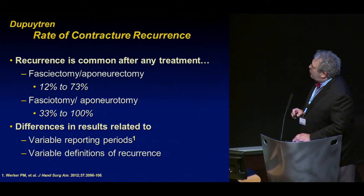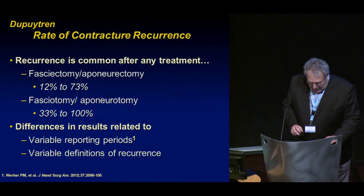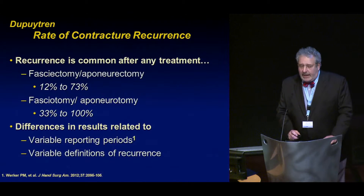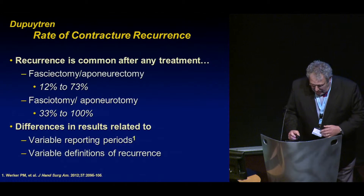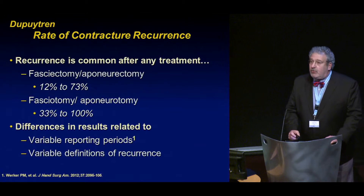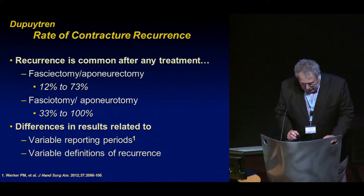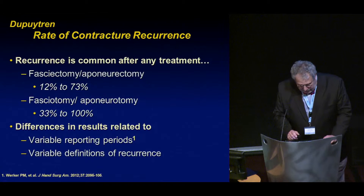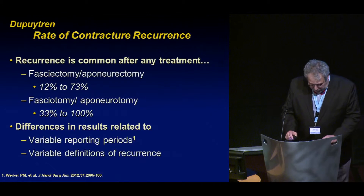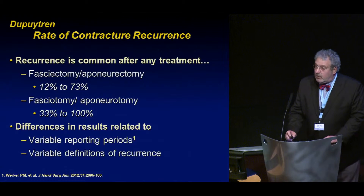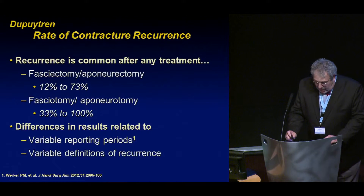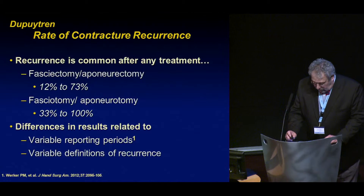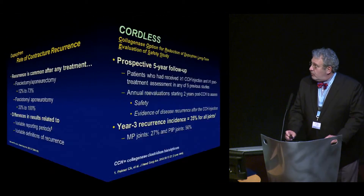The rate of contracture recurrence after any treatment varies widely in literature. After fasciotomy and eponeurotomy, from 12 to 73 percent, and after fasciectomy and eponeurotomy, 33 to 100 percent. The differences in results have been highlighted by Paul and co-workers regarding variable reporting periods and variable definitions of recurrence.